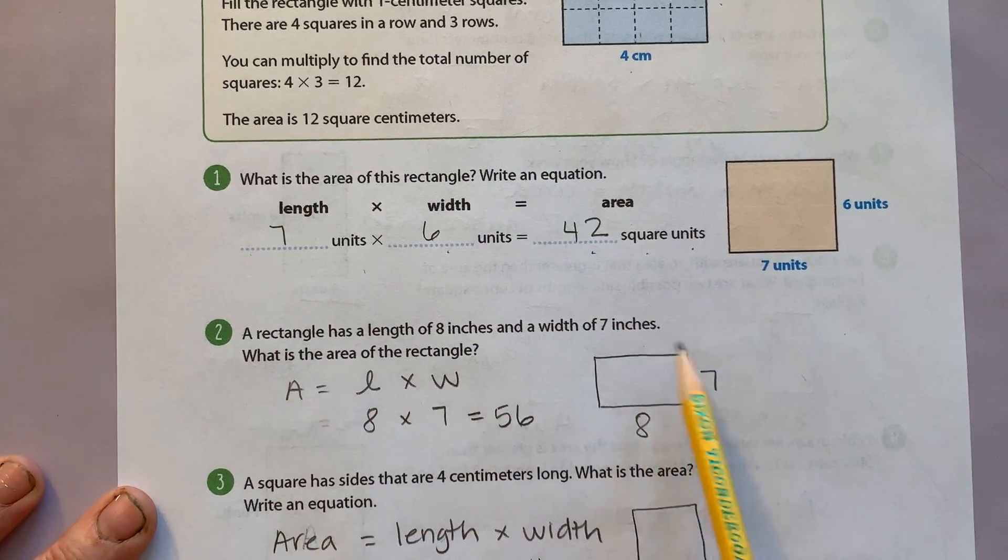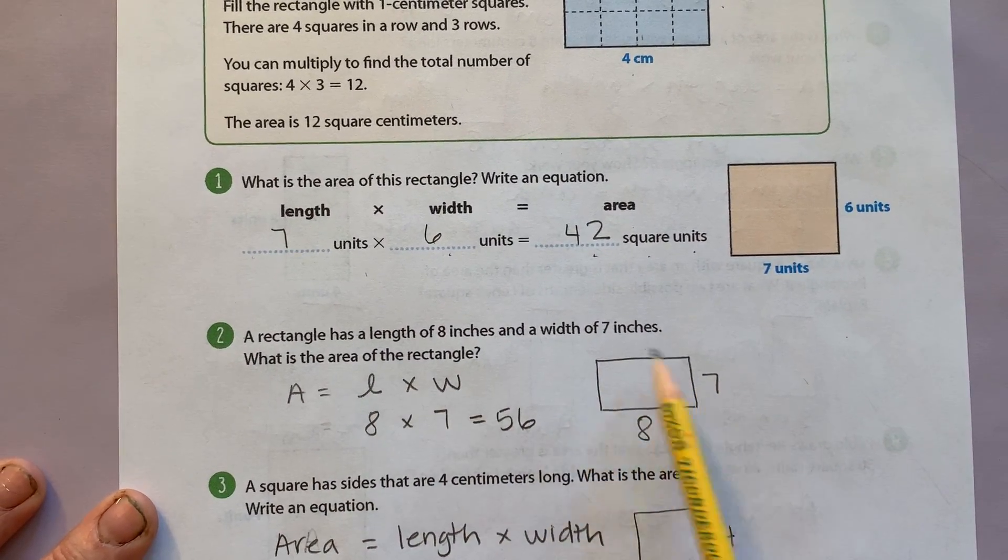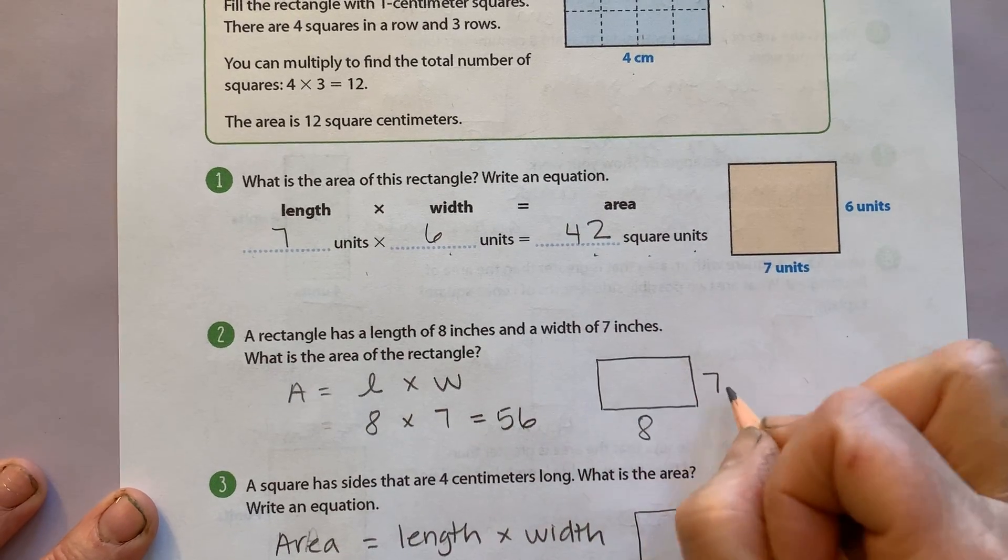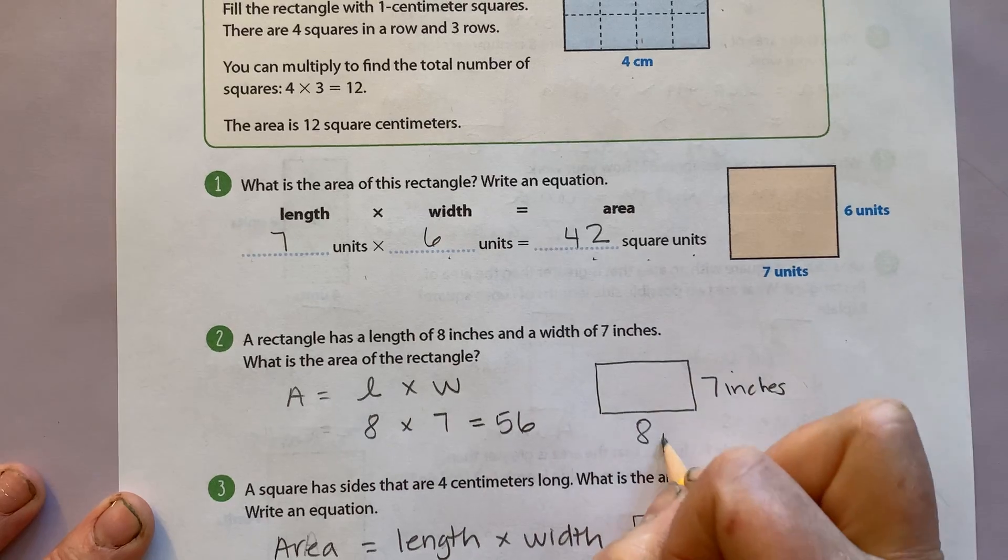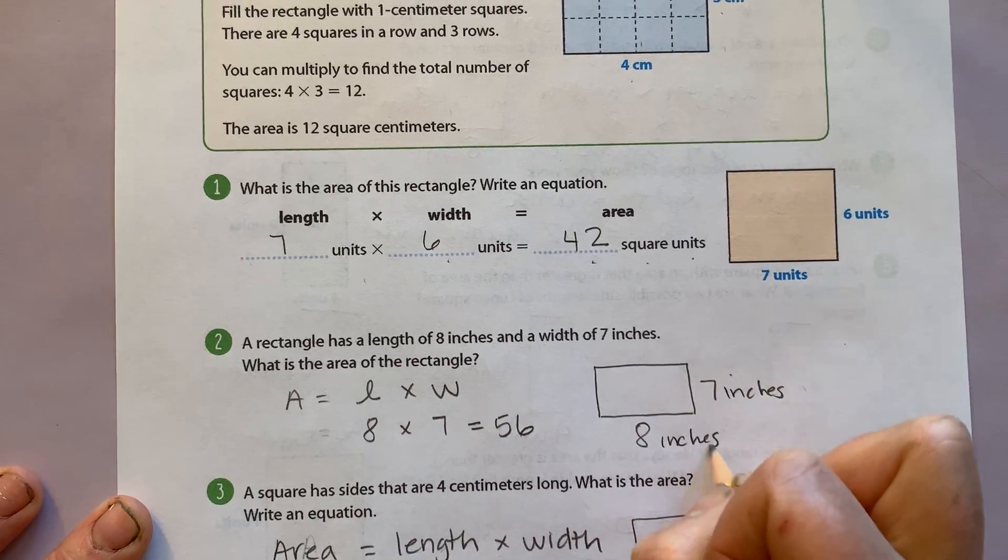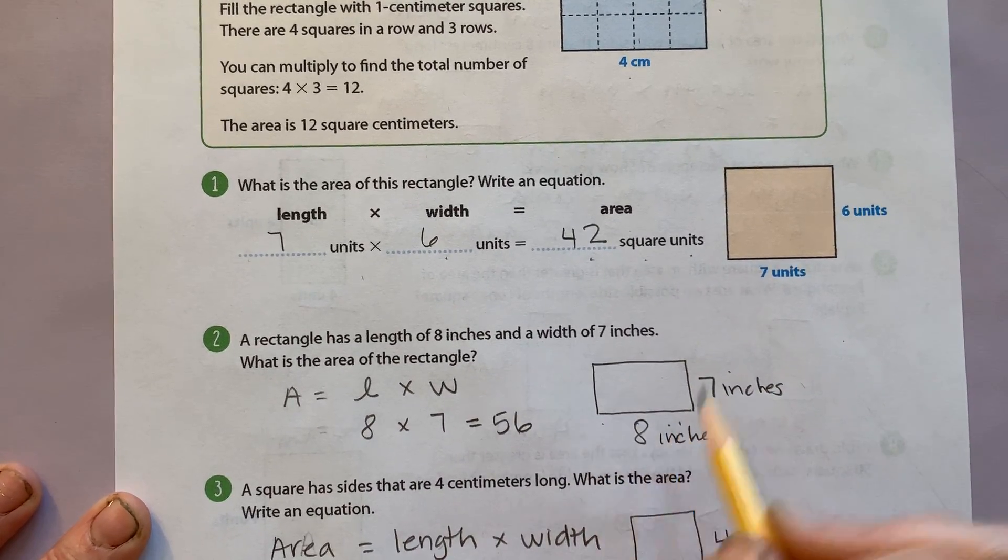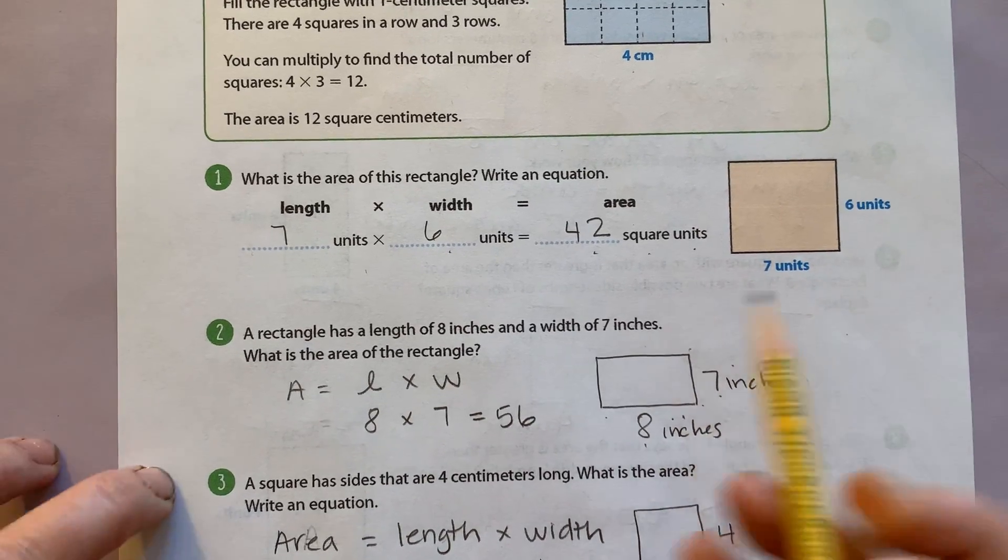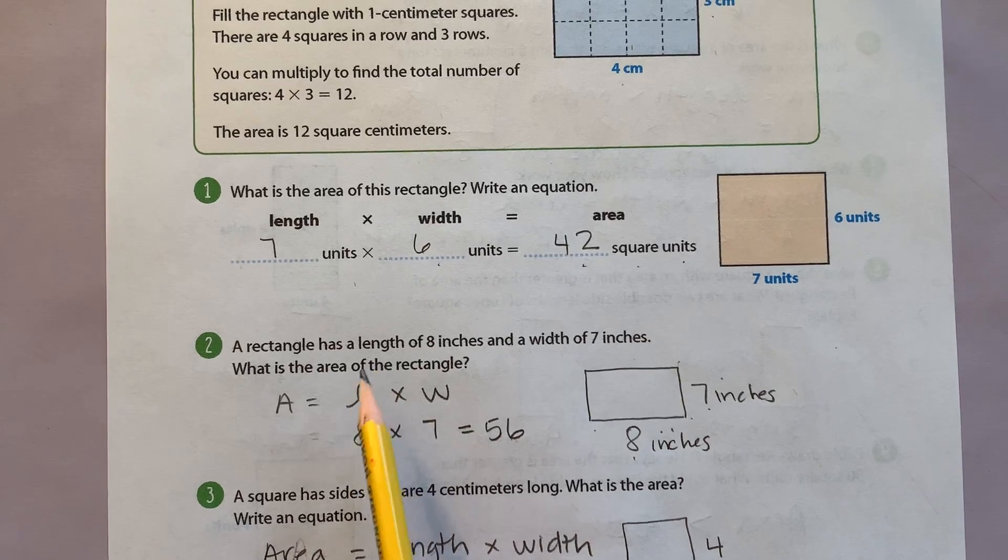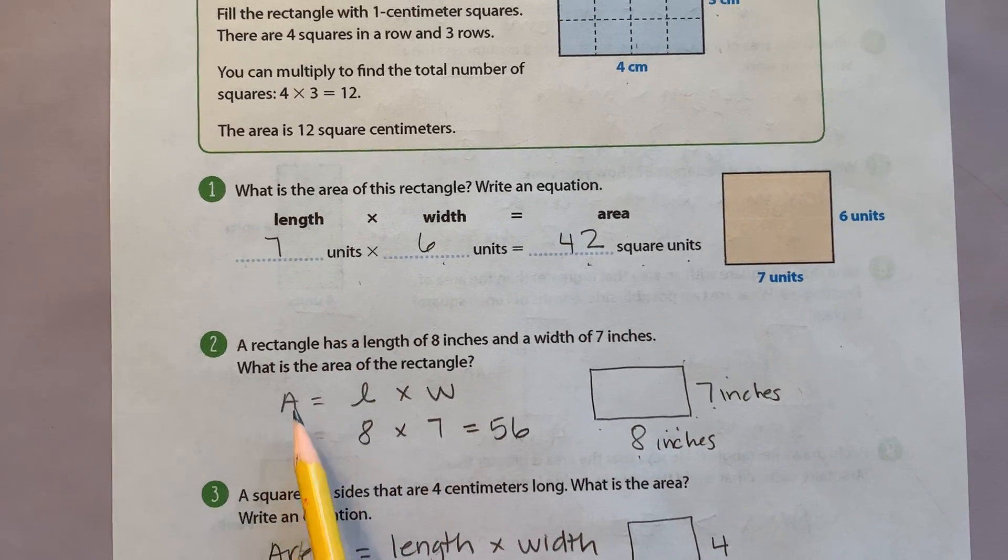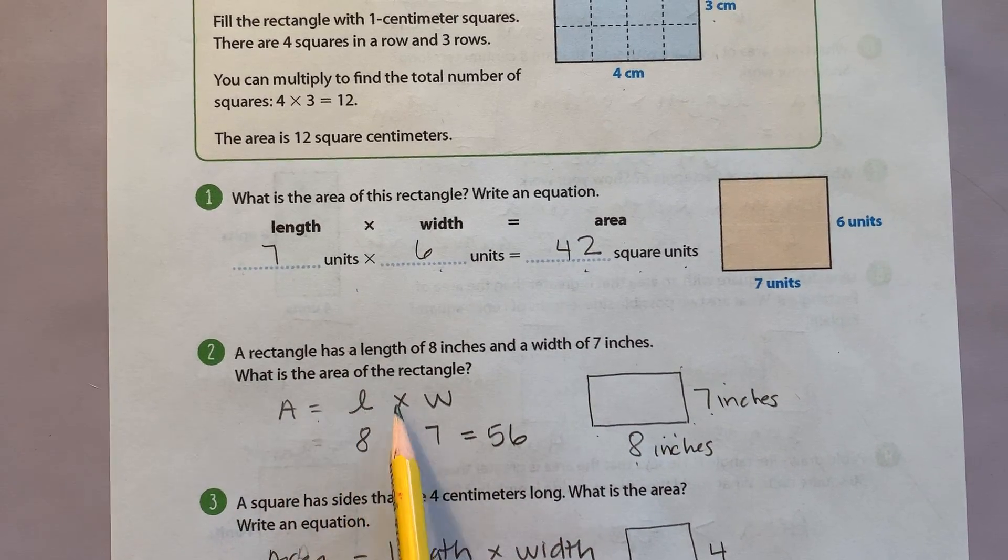In number 2, remember, it always helps to draw your picture. I noticed right here when I labeled, I forgot to put inches. I can always add that later. So I've labeled my length and my width as 8 and 7. Now, to write my area, I always practice writing my equation so I remember it. So I wrote area equals length times width.